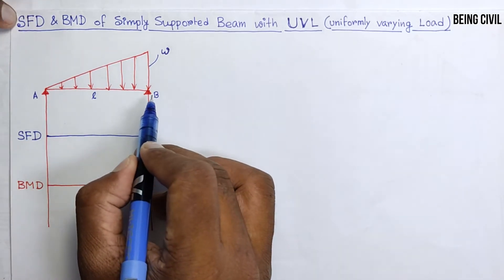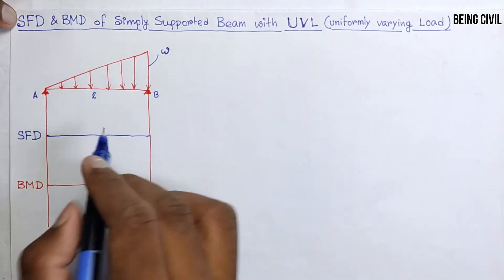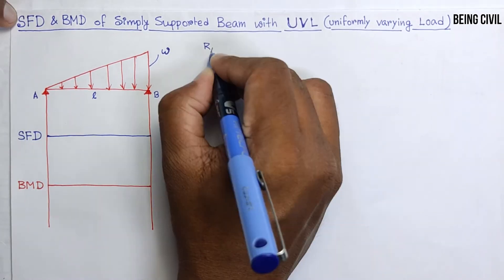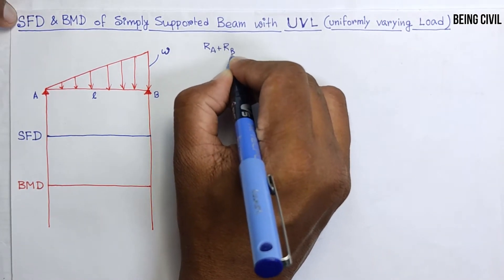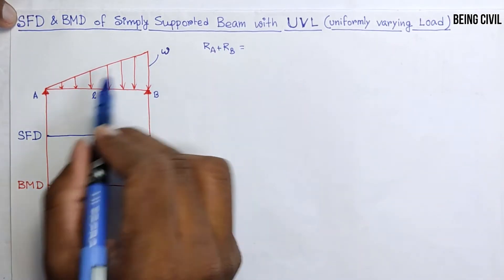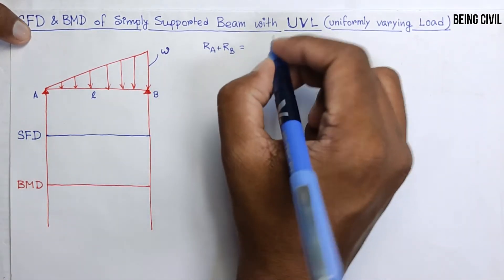You see this is not a symmetric loading, so you have to calculate RA and RB by taking moment about any point. RA plus RB will be equal to the total load on the beam, which is the area of this triangle.